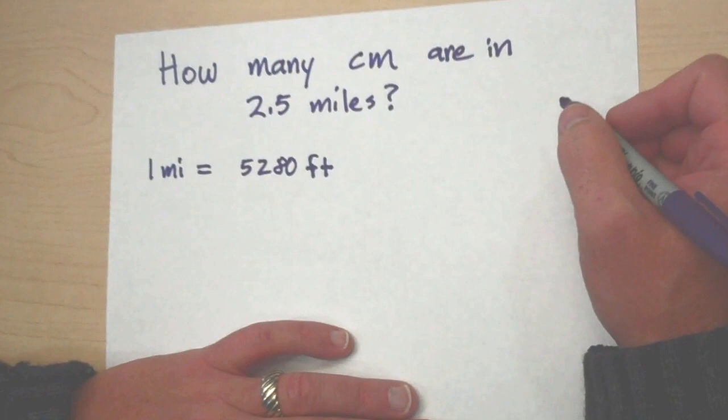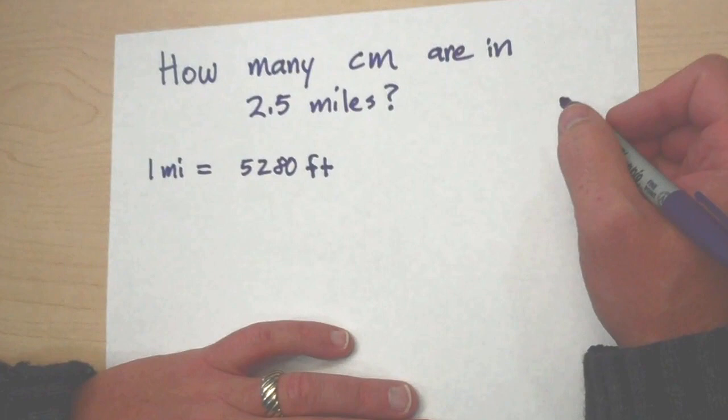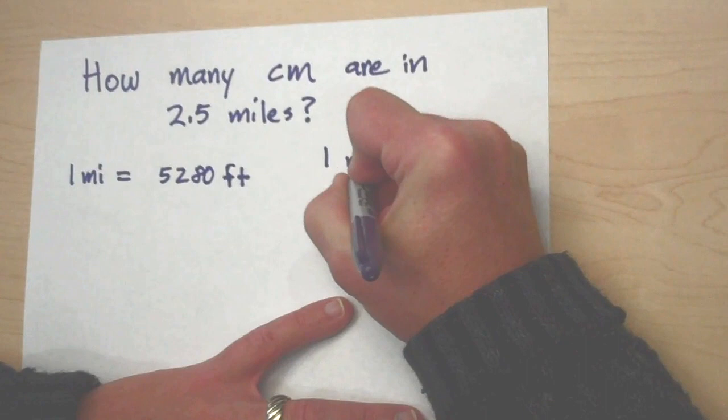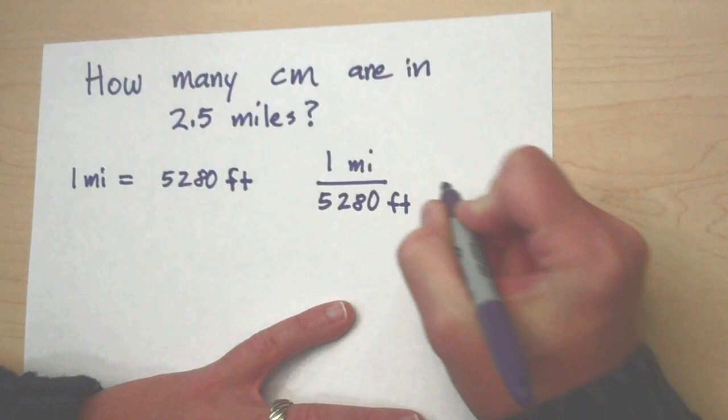We know that one mile is equal to 5,280 feet. So we could write down the units like this. We could say that there is one mile per 5,280 feet. Per means to divide. Or we could say that there is 5,280 feet per one mile.